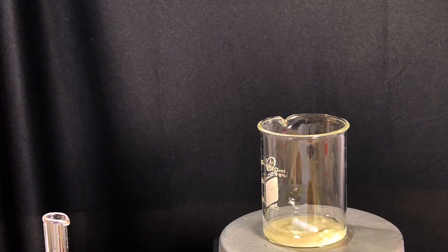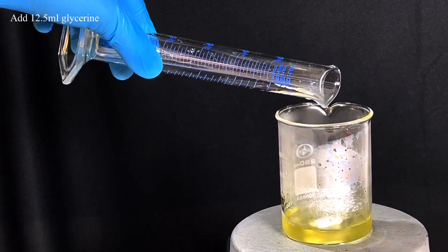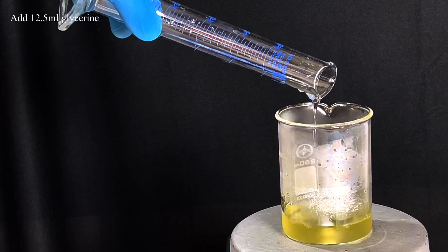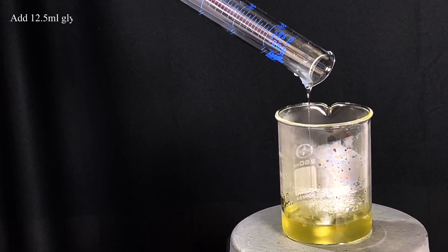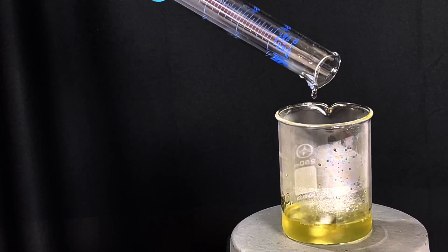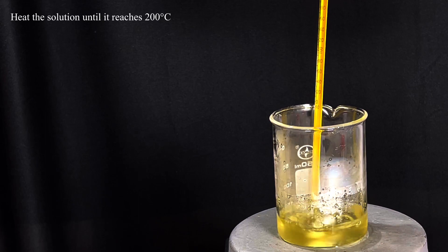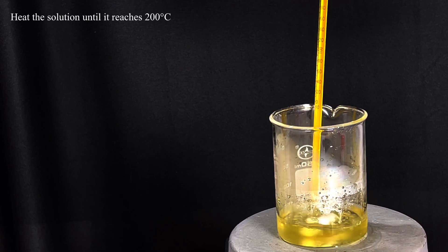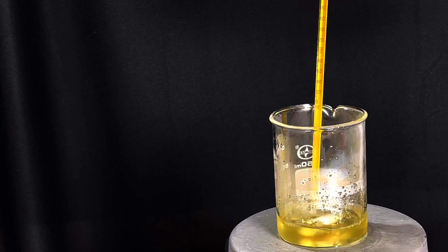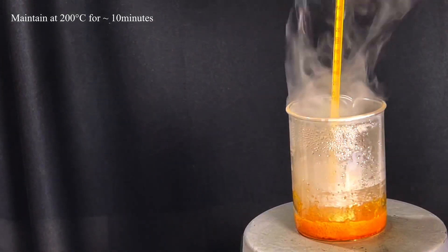When the solution turns clear, 12.5 milliliters of glycerin was added to the beaker. Place a thermometer and start heating the contents of the beaker. Initially, water boils away and then the contents slowly change color into a dark yellow-orange. The temperature was maintained at 200 degrees C for approximately 10 minutes.